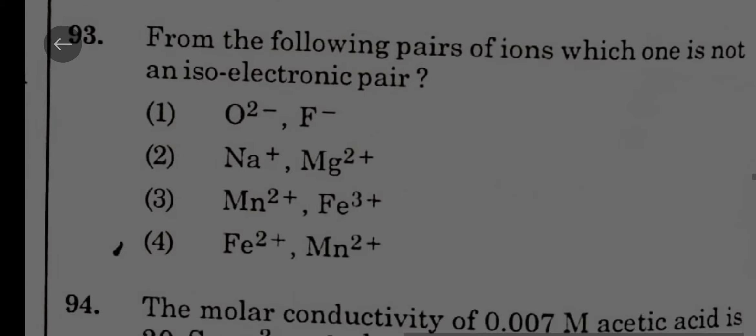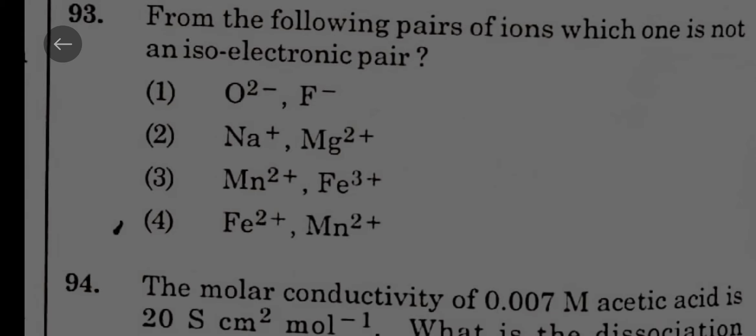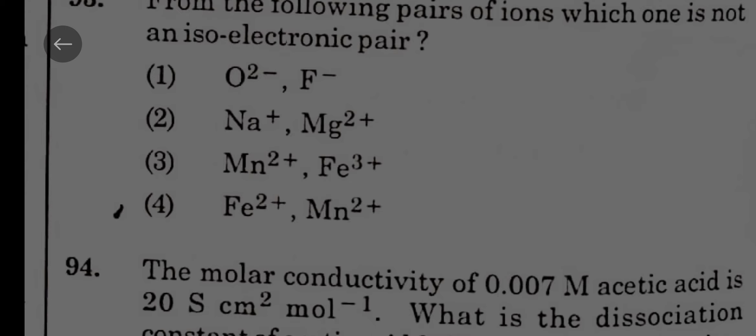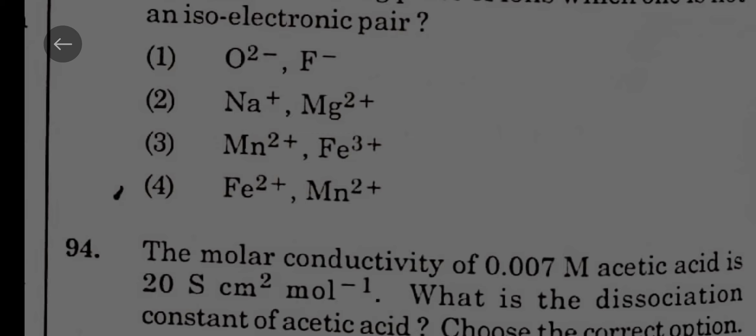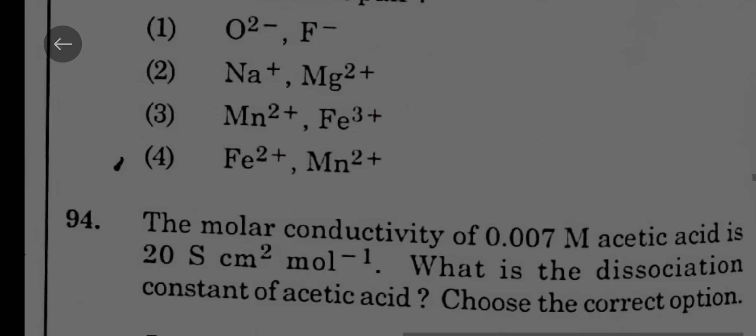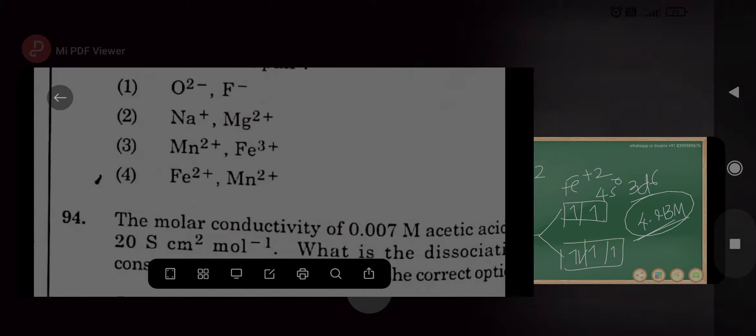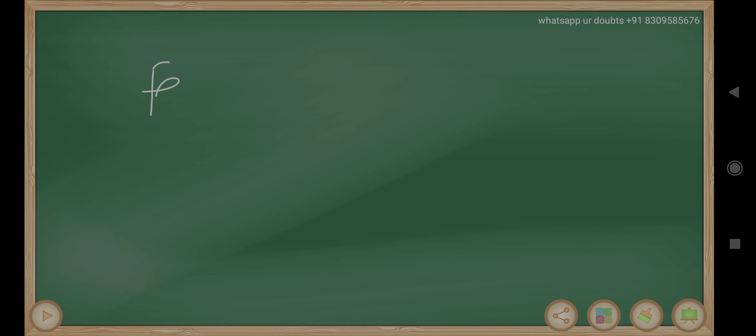From the following pairs of ions, which one is not an isoelectronic pair? It's an easy question from the periodic table. Isoelectronic pair means number of electrons should be same. That cannot be same in case of Fe plus 2, Mn plus 2, because two different atoms with same oxidation state can never be isoelectronic. Fe plus 2, Mn plus 2. If you want explanation I will give you: Fe plus 2, iron atomic number 26, two electrons gone, so 24. Manganese 25, two electrons gone, so 23. They can never be isoelectronic.